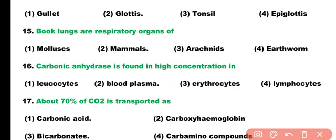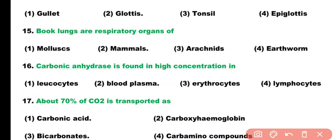Question number 16. Carbonic anhydrase is found in high concentration in: leukocytes, blood plasma, erythrocytes, or lymphocytes. Correct answer is option 3. Carbonic anhydrase is an enzyme which carries carbon dioxide and is present in high concentration within the red blood cells, or erythrocytes.